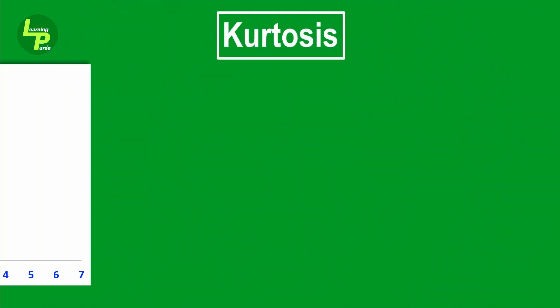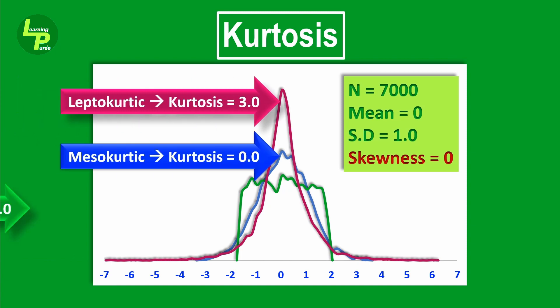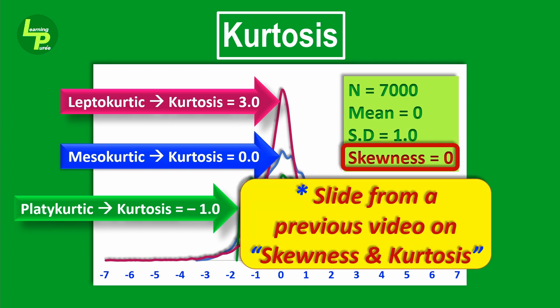If you have seen this earlier video on kurtosis and skewness, you will recall that we had calculated kurtosis for a data set with skewness equal to zero. I had mentioned that kurtosis is the only measure that differentiates data sets symmetrically distributed around the arithmetic mean, that is when skewness is zero or not present.